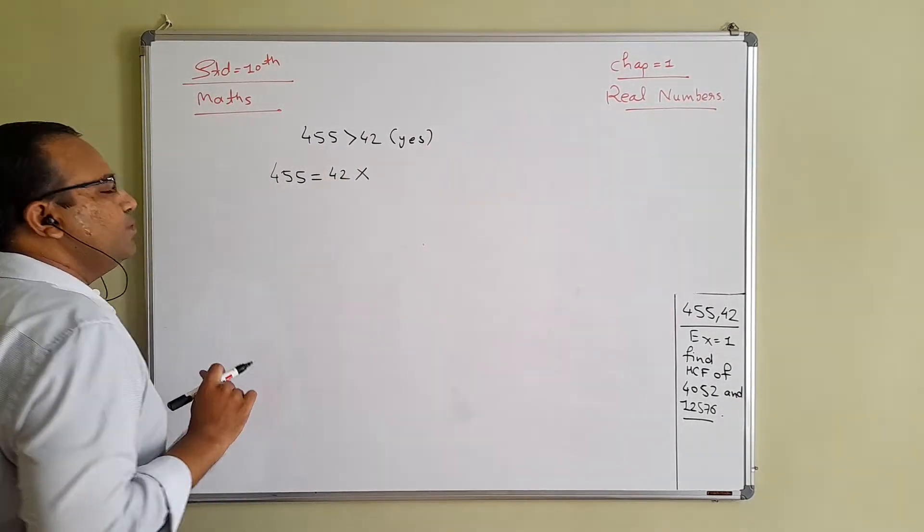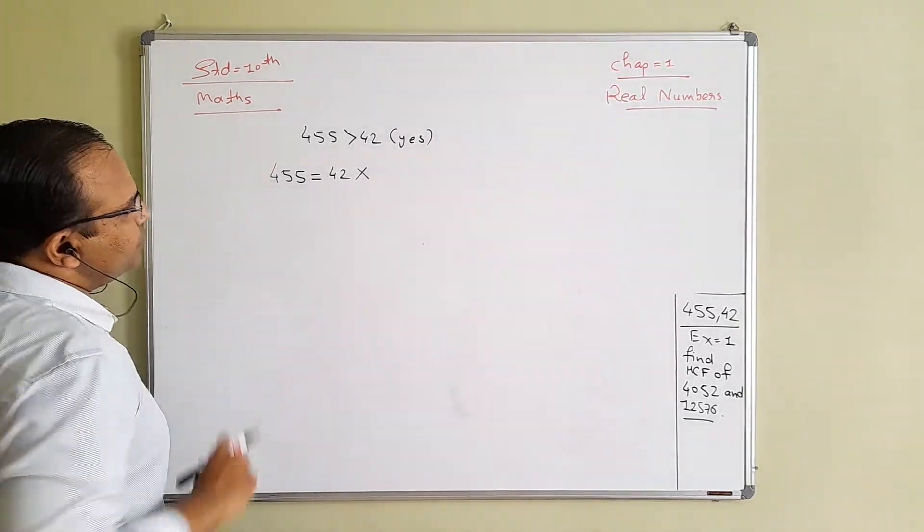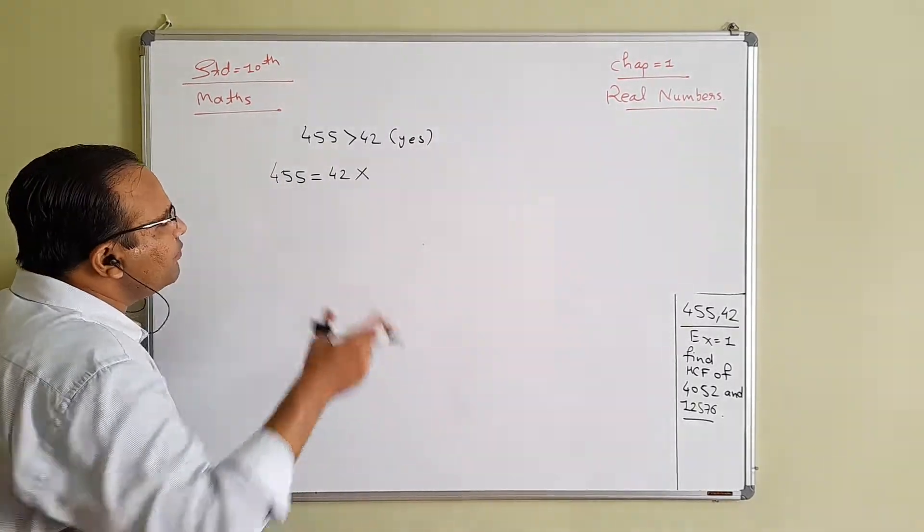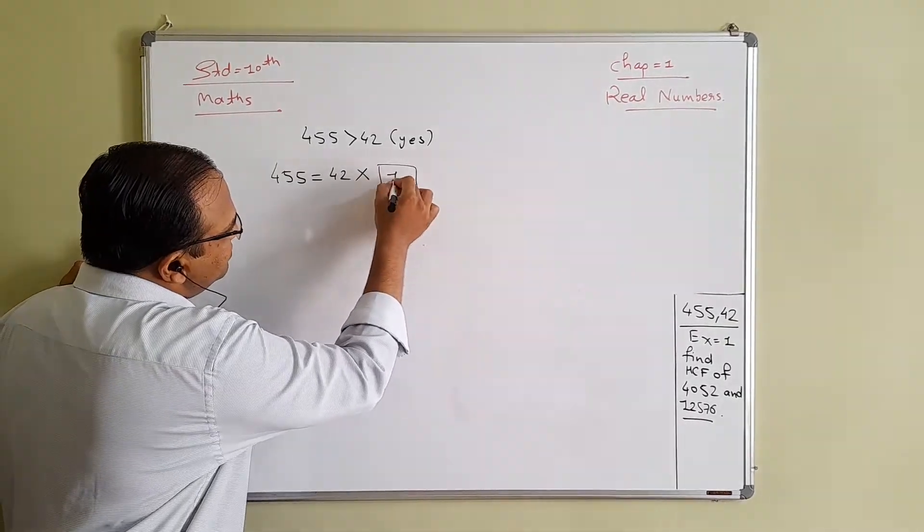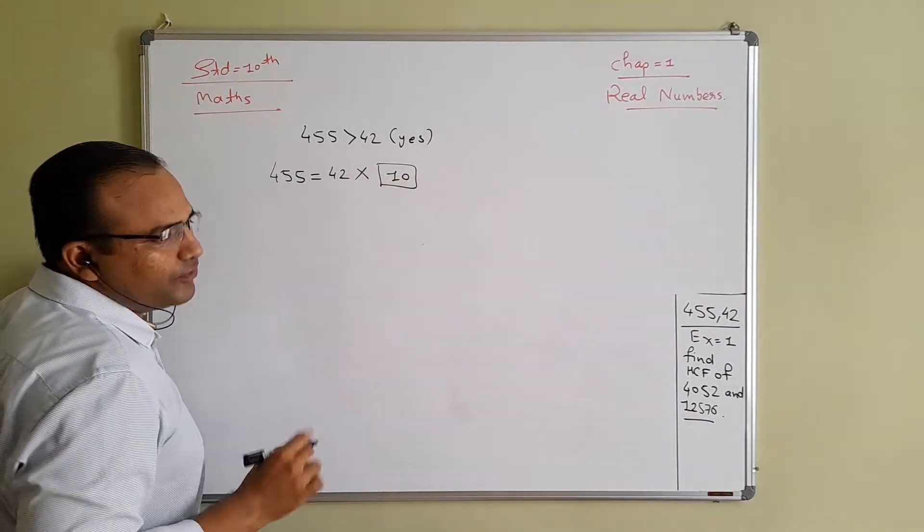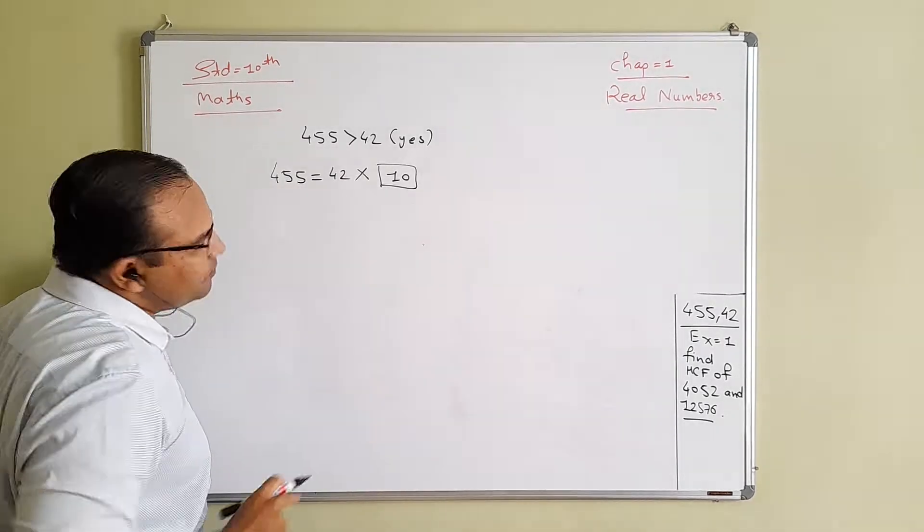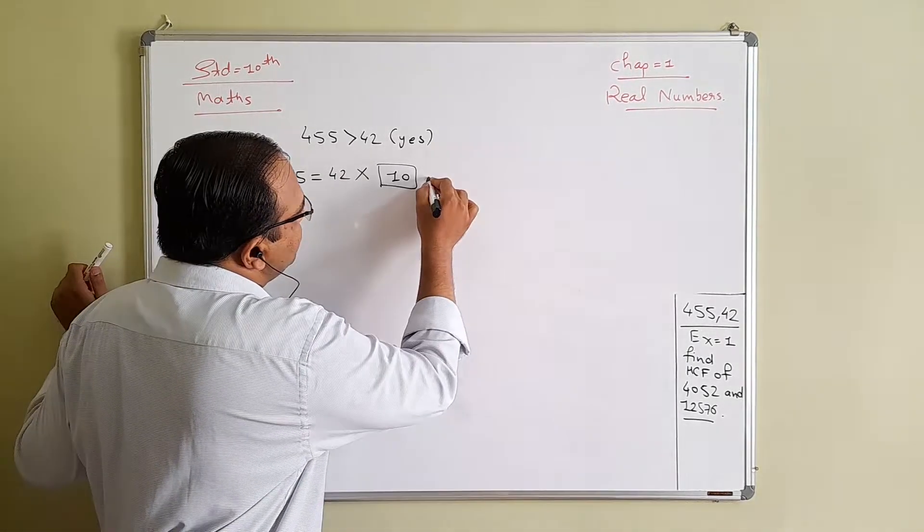So which number should we multiply with 42 so we will go near about 455? 42 tens. 42 tens, 420. 420 is near 455, so 42 tens is 420.